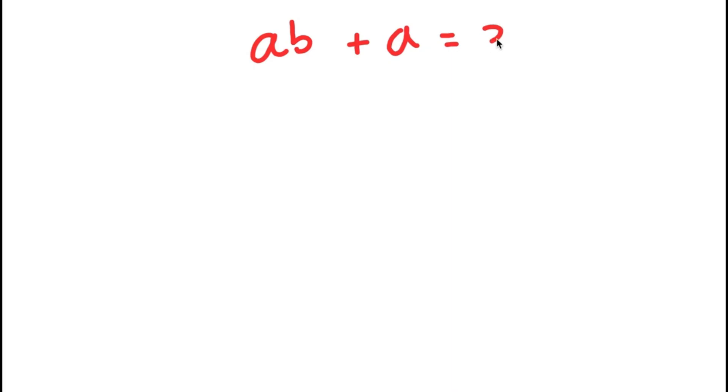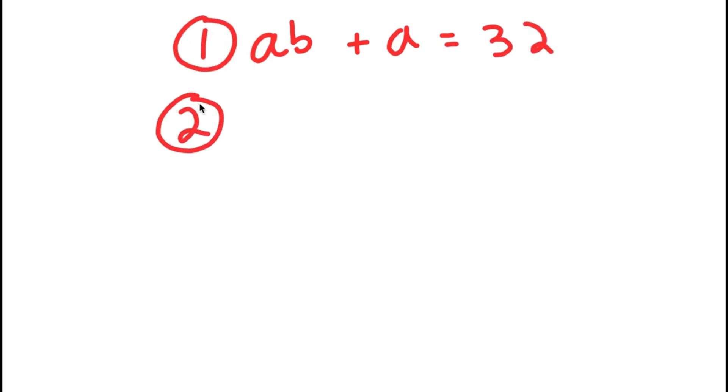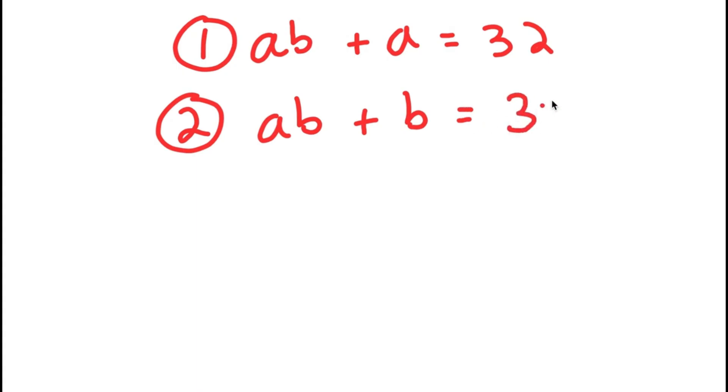In this video, I'm going to be solving a system of equations. In my system of equations, I have two equations. My first is AB plus A is equal to 32 — this is going to be my first equation. And my second equation is going to be AB plus B is equal to 35.